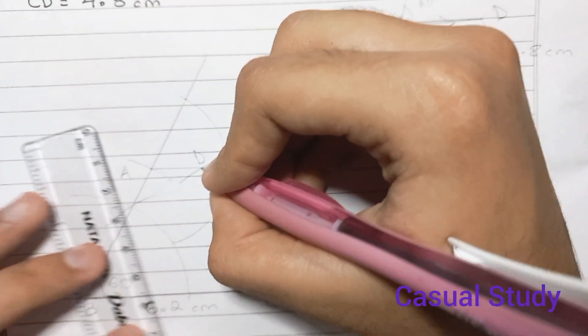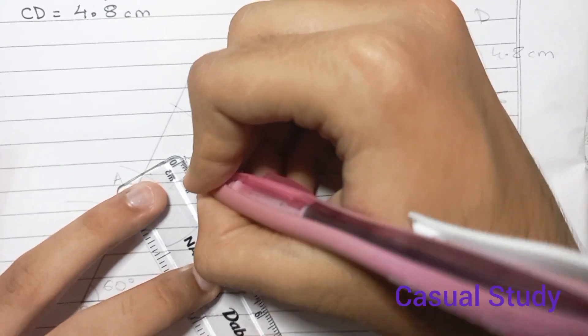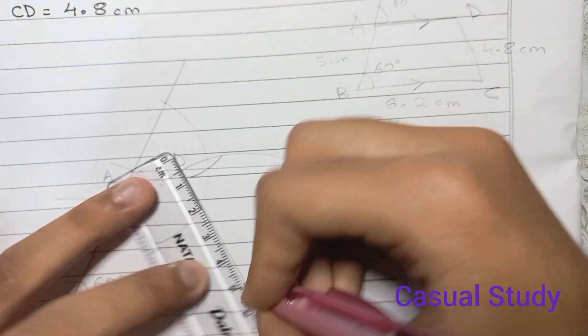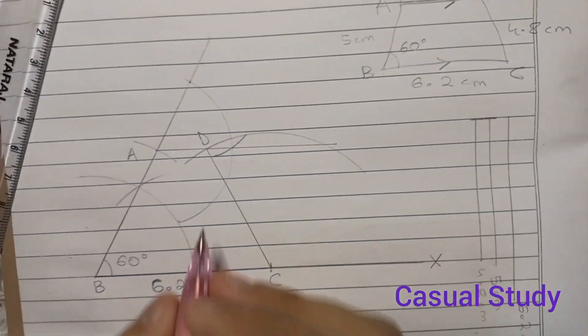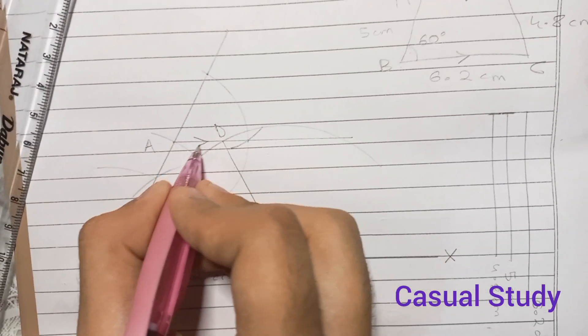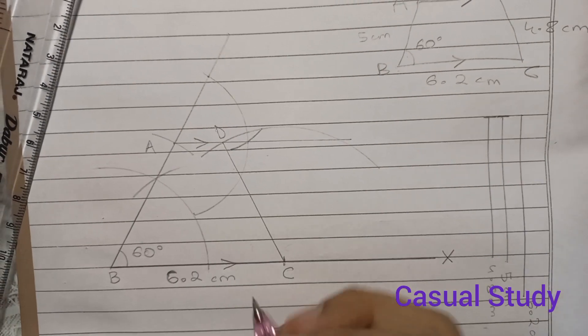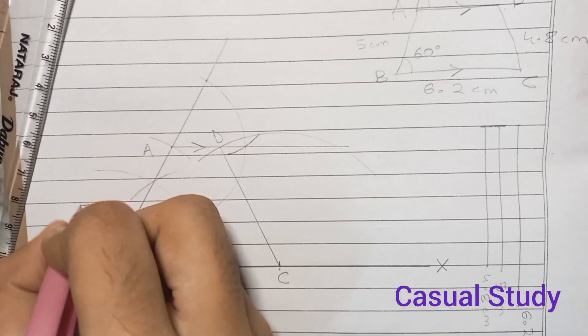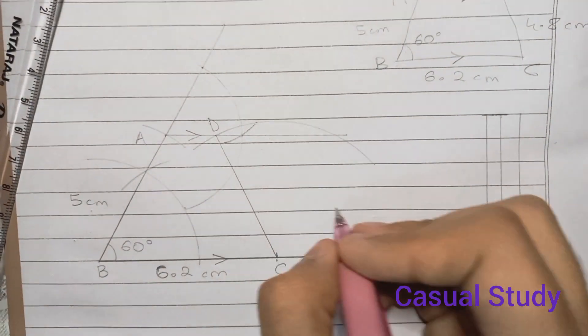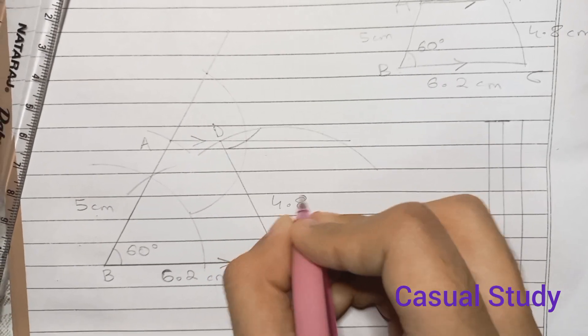And now we will be joining DC. So we see that AD is parallel to BC. AB is equal to 5 cm and DC equals 4.8 cm.